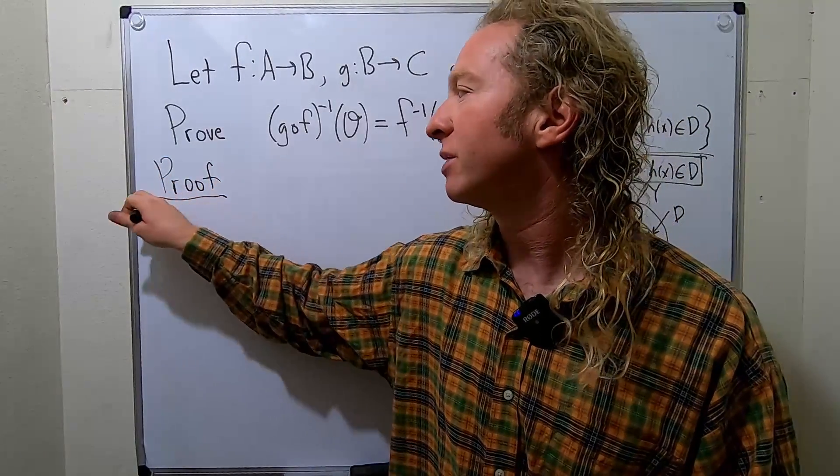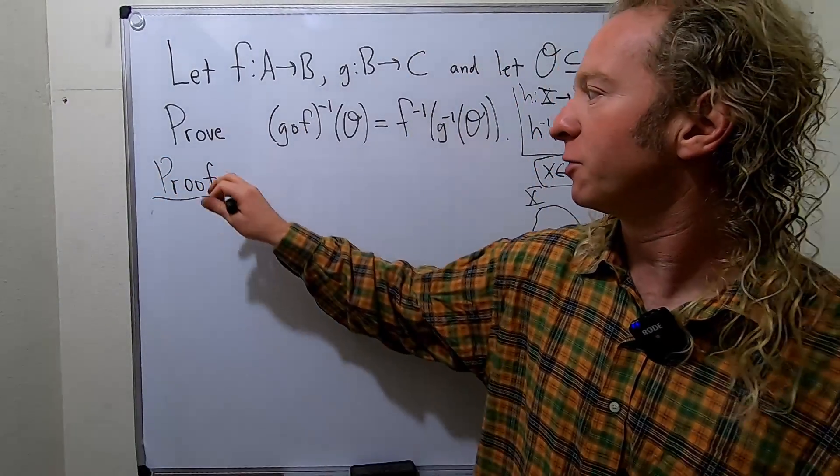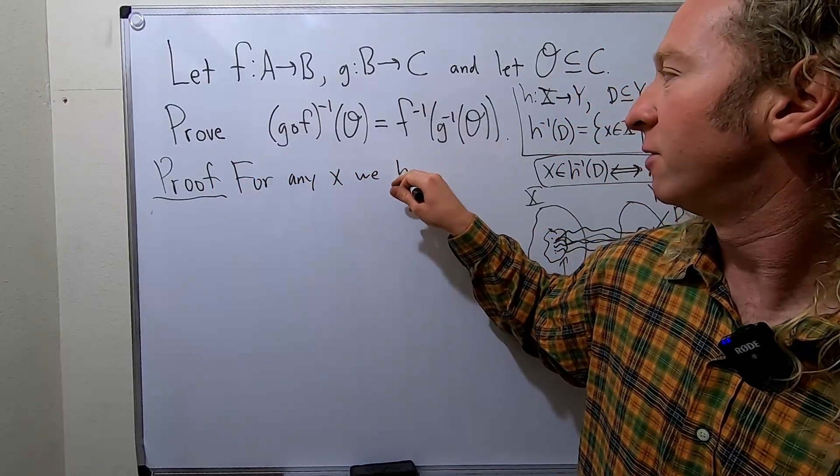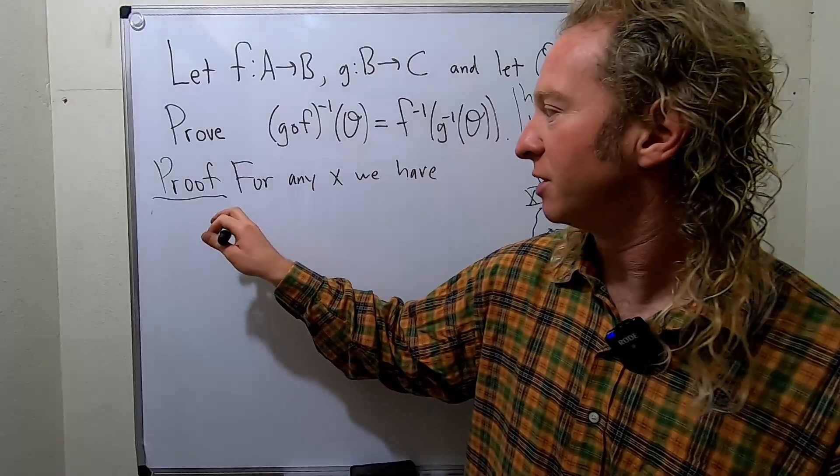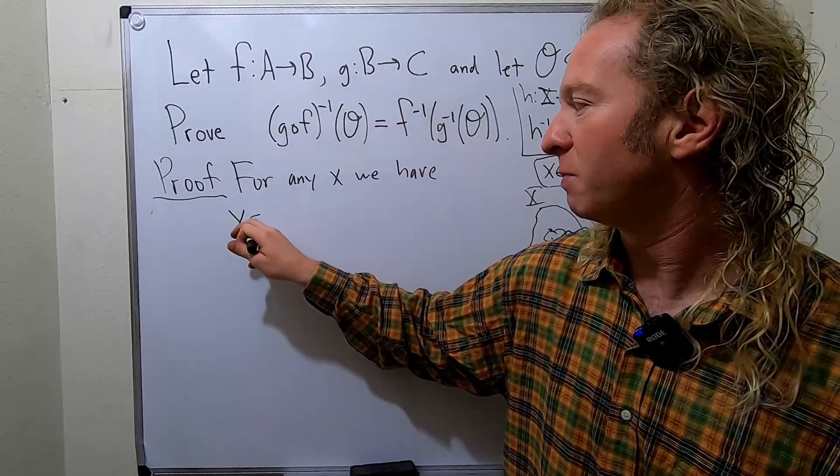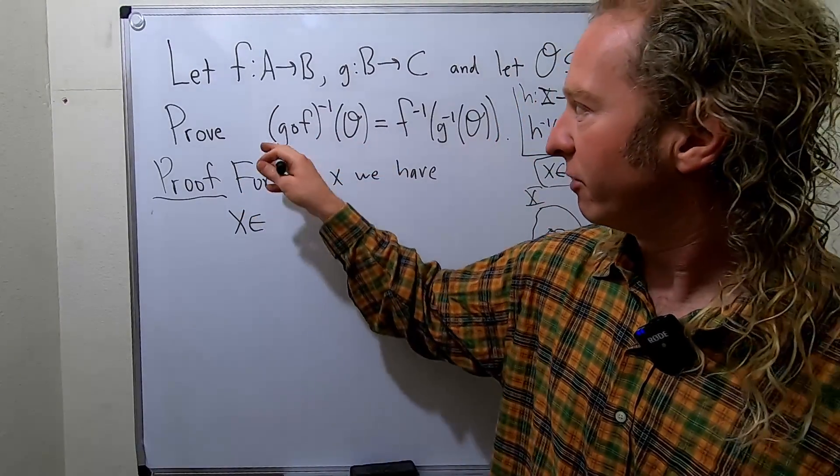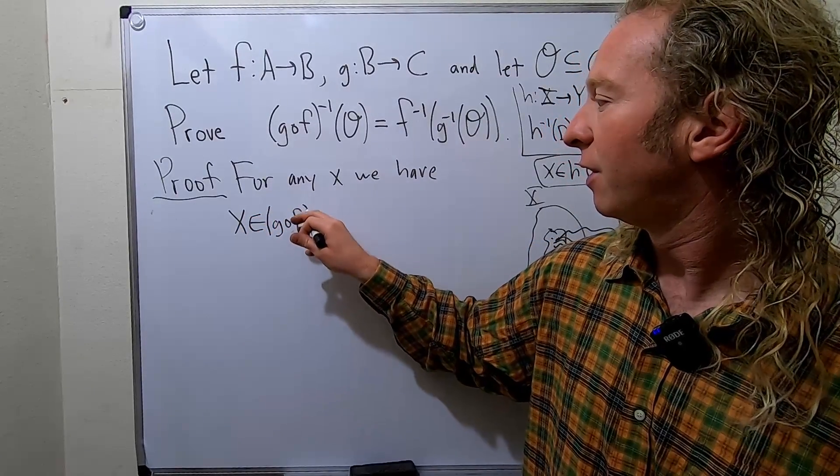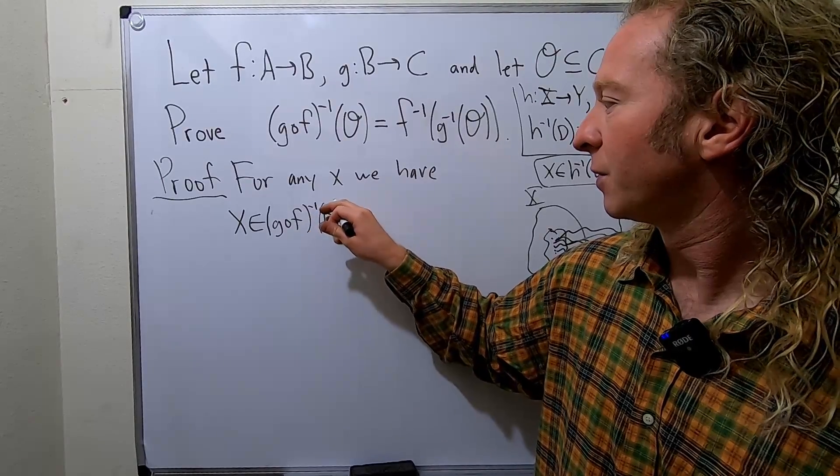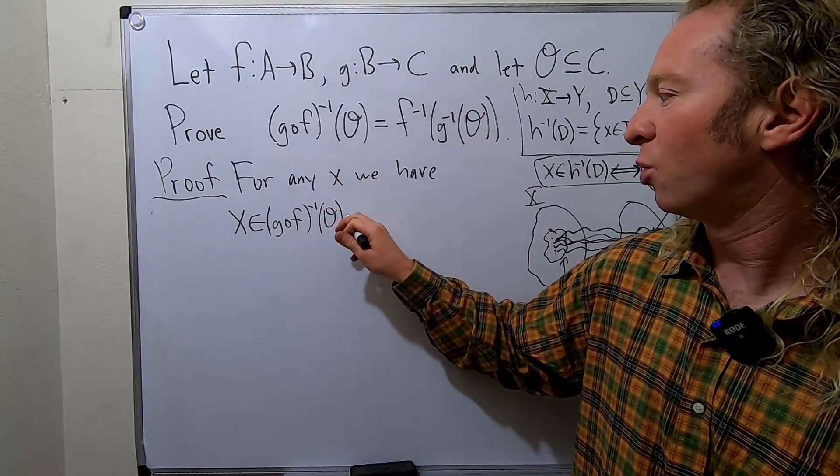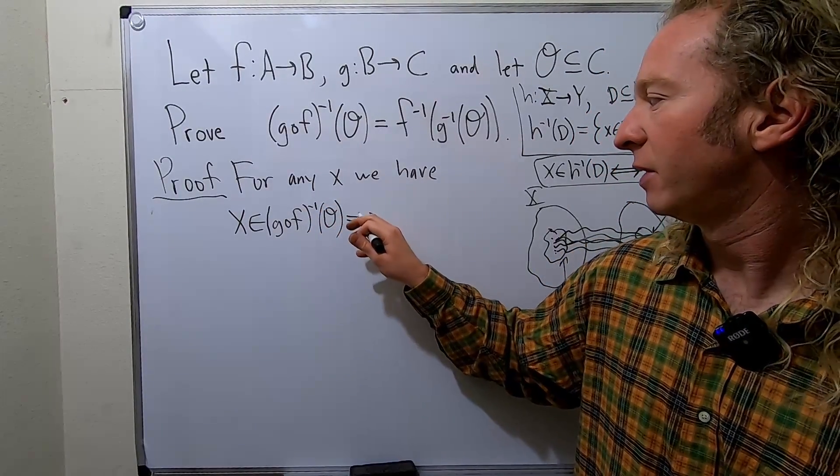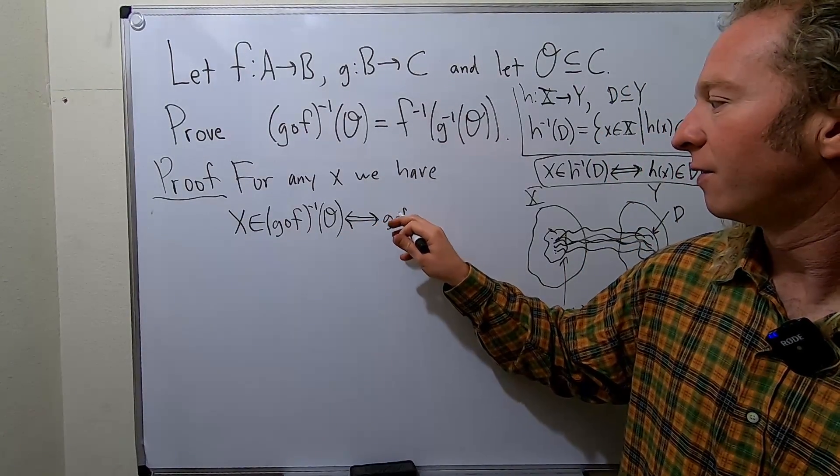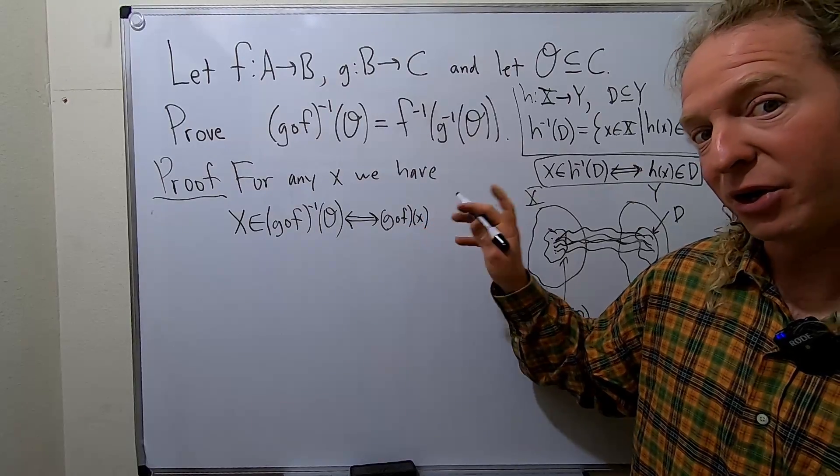Let's just do it. Let's do it all at once. Let's just go through it all at once. So for any X that satisfies this condition, so as long as X is in this set, I'm going to use the biconditional arrows to do this. So if X is in this set, so X is in GOF inverse of O. So what does this mean?